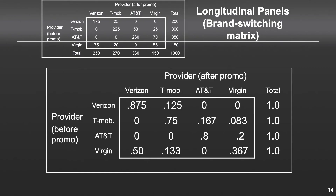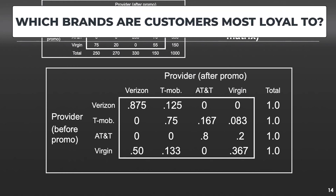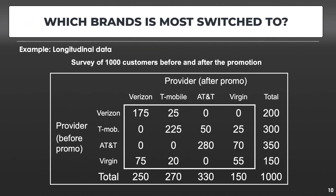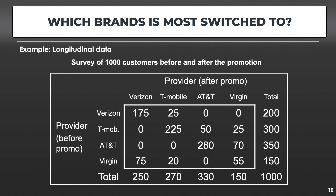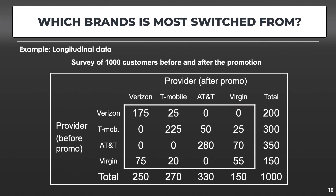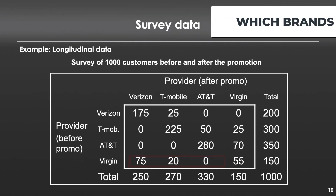But we can answer quite a few interesting questions. Which brand are customers most loyal to? It's clearly Verizon with 87.5% loyalty. Which brand is most switched to? Virgin, with a total of 95 people switching to become Virgin customers. And the most switched from? Virgin again — it lost 95 customers in total. So we can still gather a lot of information about the competitive environment, even if we can't determine whether the promotion worked.